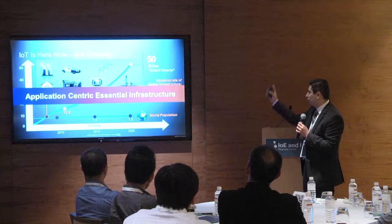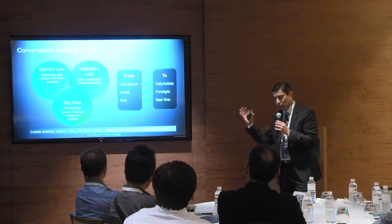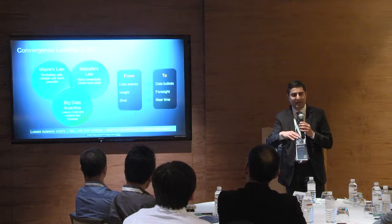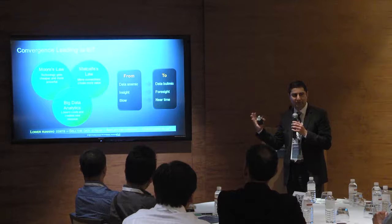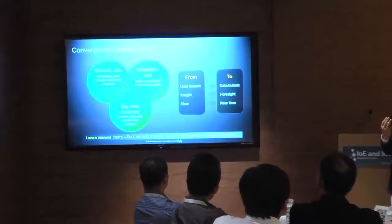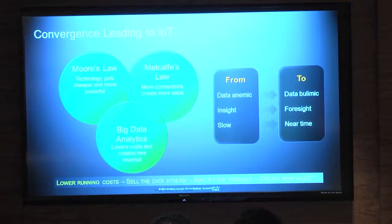You saw this slide — world population and number of devices going up. Why is that happening? On one hand, things follow Moore's Law, so technology is getting cheaper. On the other hand, if you follow Metcalfe's Law, the more connections you have, the more value you have. The more things you have connected, the more opportunities you have to extract value. And then there's the whole dynamic around big data and analytics.